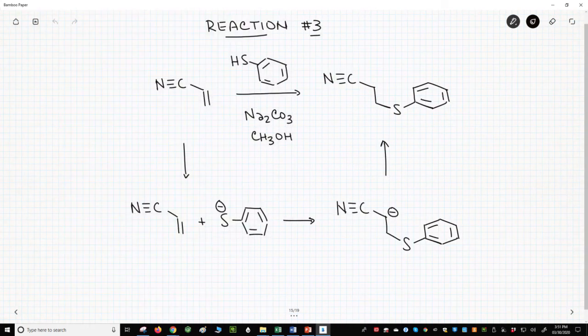Reaction number three. Our last reaction uses an alpha-beta unsaturated nitrile as the Michael acceptor. A thiol is the Michael donor.